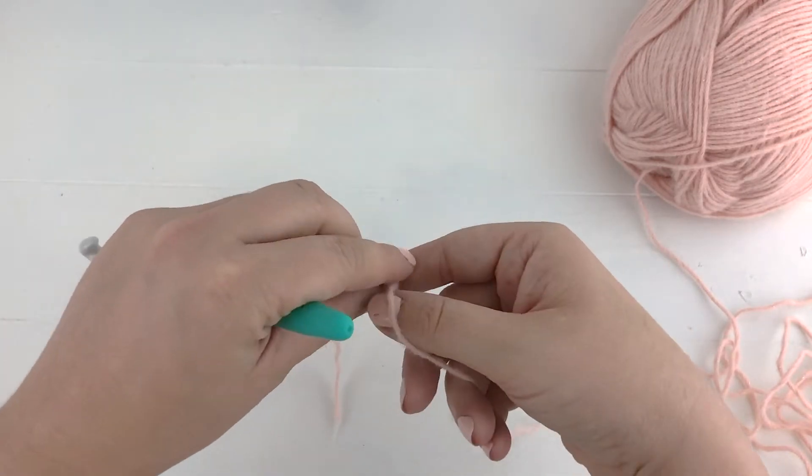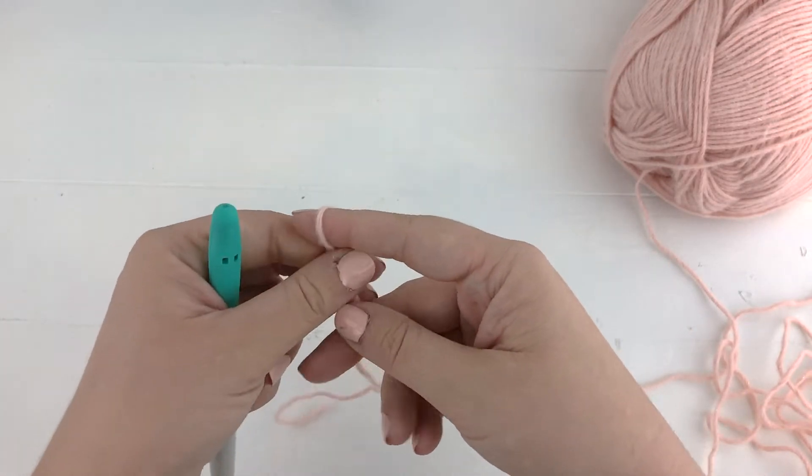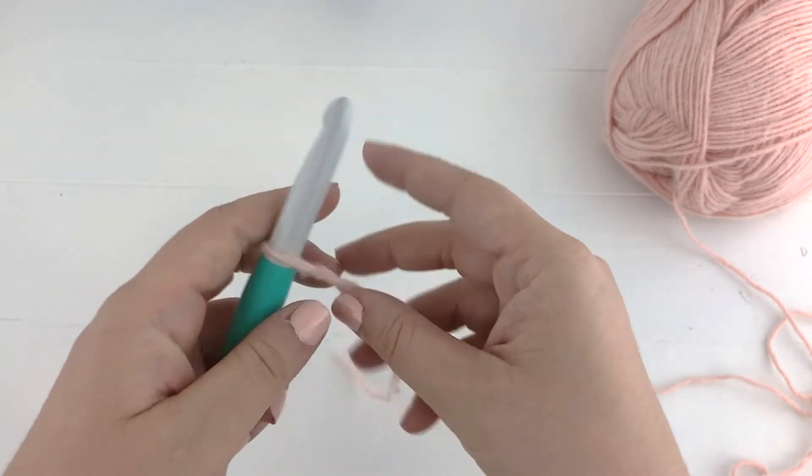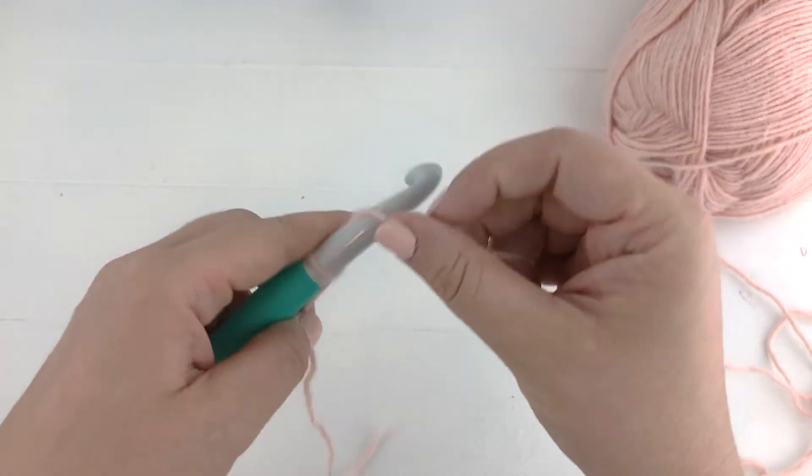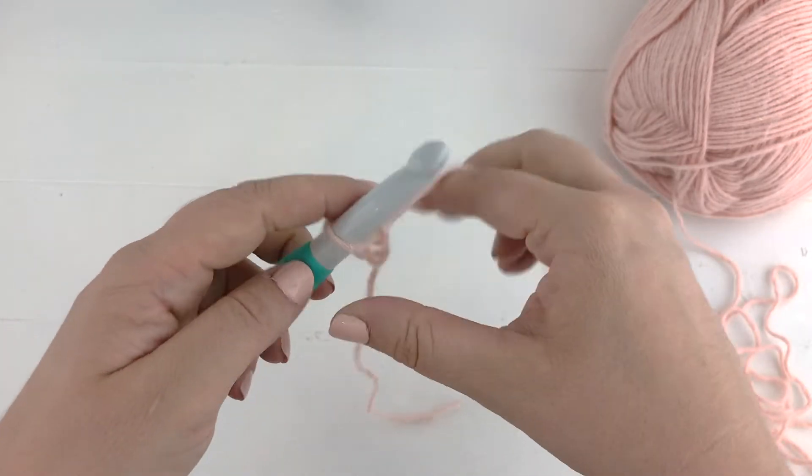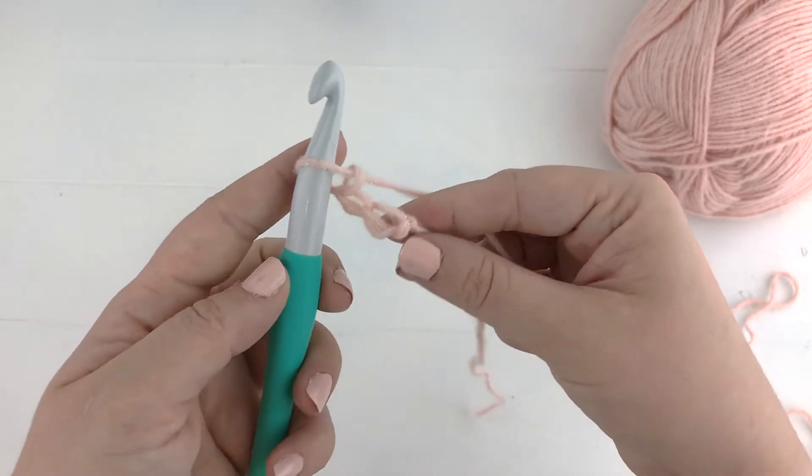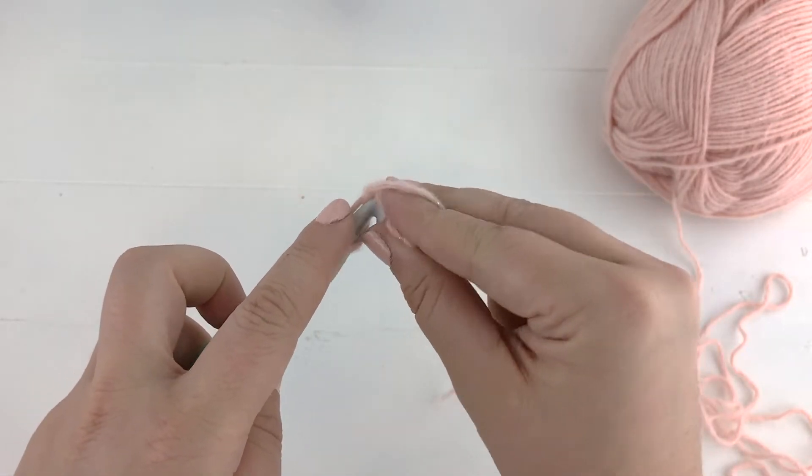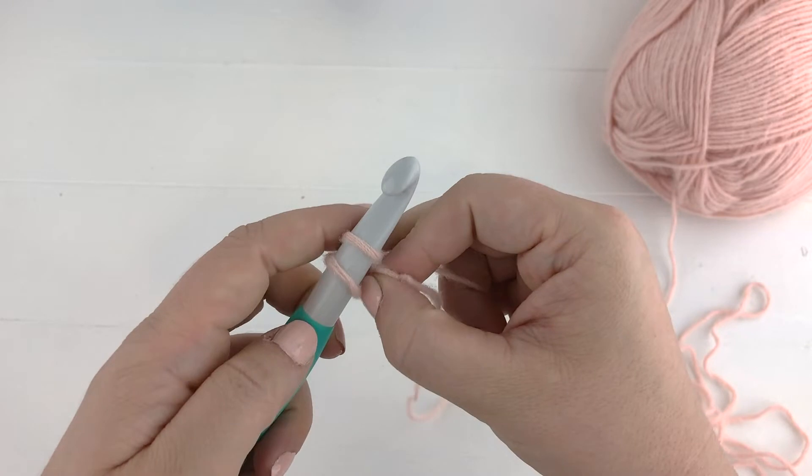To start you'll make a slip knot and put your yarn on your hook, and we are going to chain three. Working into the second loop from the chain, single crochet into that chain and the next chain.